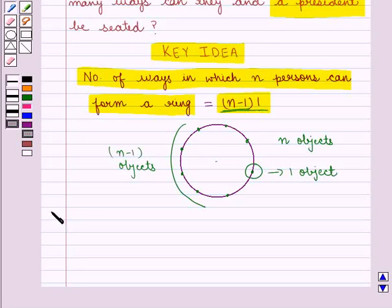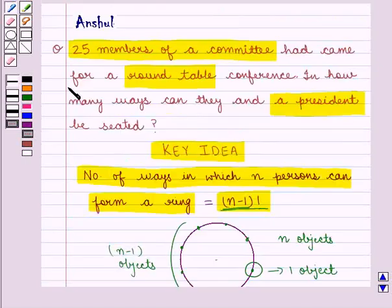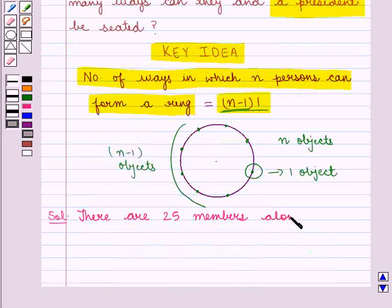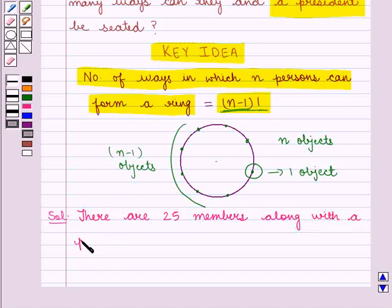Let's move on to the solution. Now in the question it is given that there are 25 members along with the president who are to be seated around a circular table.